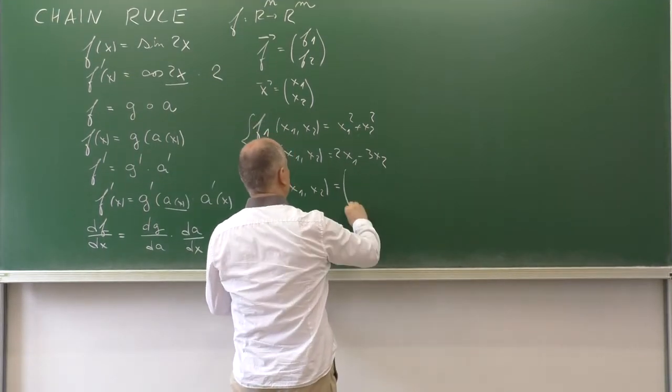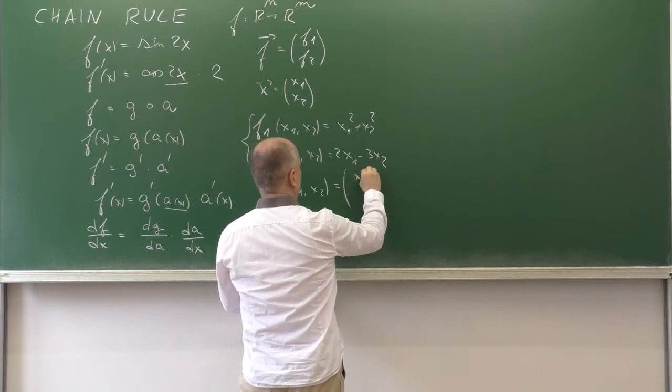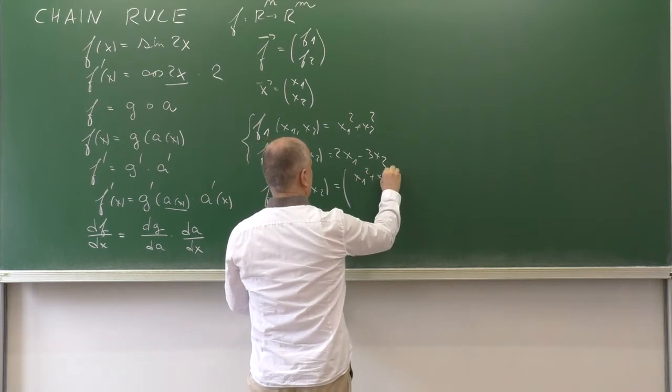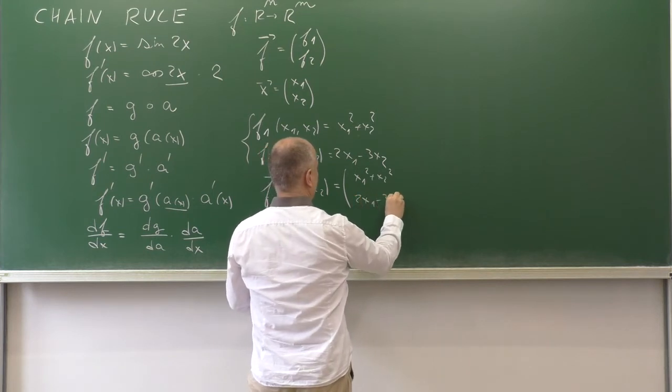Well, I prefer the column vector, so let me write it this way: [x₁² + x₂², 2x₁ - 3x₂]ᵀ.